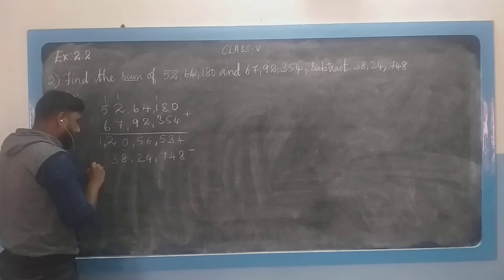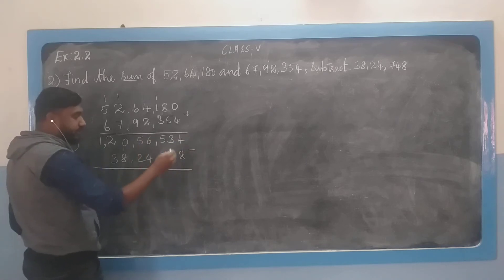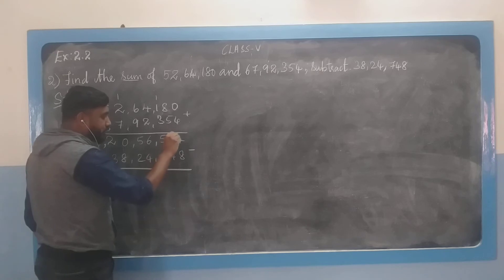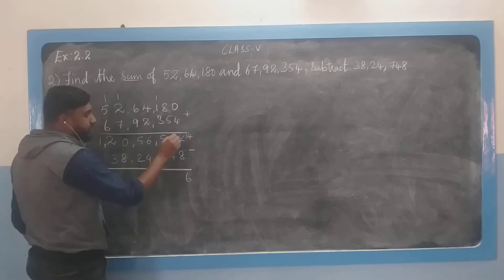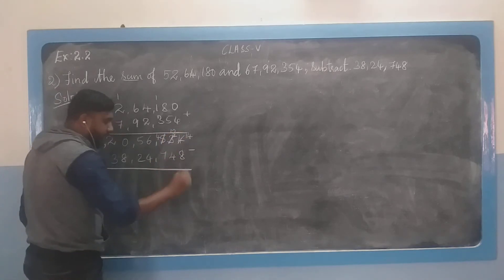We need to subtract this from this. Now 4 minus 8 is not possible, so borrow from the previous one. 3 will become 2 and 4 will become 14. Now what is 14 minus 8? It is 6. Now it is 2 minus 4, not possible. Borrowing. So 5 will become 4 and 2 will become 12. So 12 minus 4 is 8.